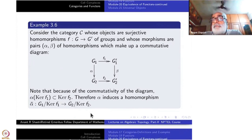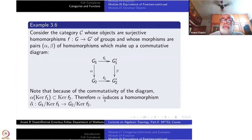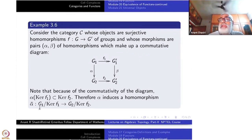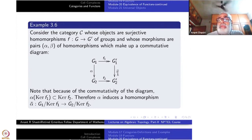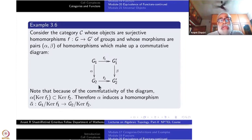Because of commutativity of the diagram, if you take alpha of the kernel of f1 — take an element of kernel of f1 and apply alpha — that will be contained in the kernel of f2. An element of kernel of f1 maps to triviality under f1, so it also maps to triviality under f2 via beta. Therefore alpha maps kernel of f1 into kernel of f2, and so alpha induces a homomorphism alpha bar from G1 modulo kernel of f1 to G2 modulo kernel of f2.